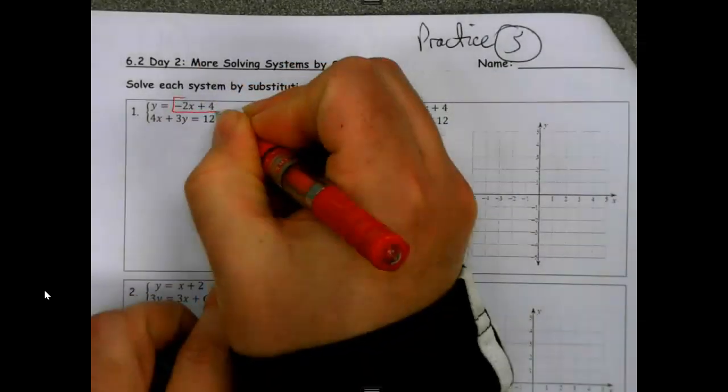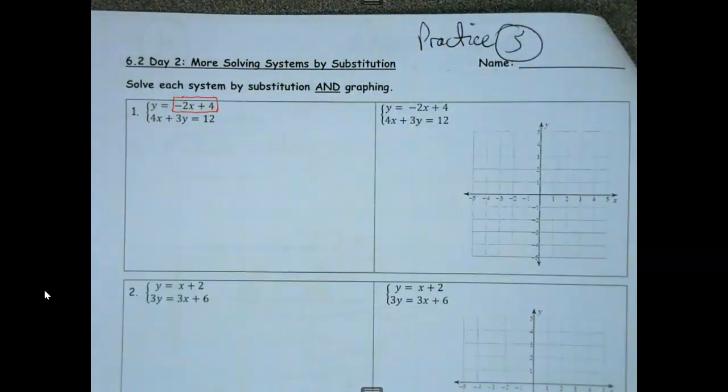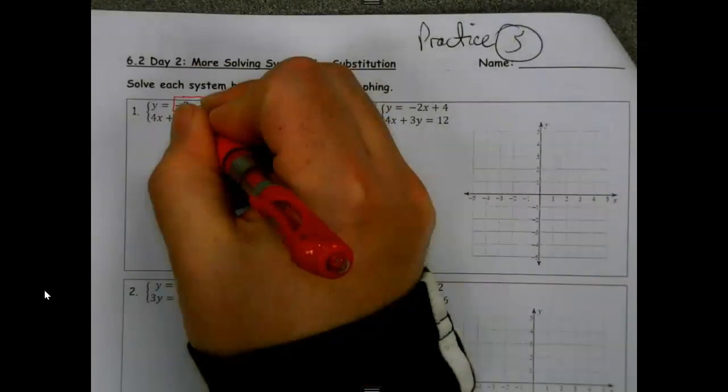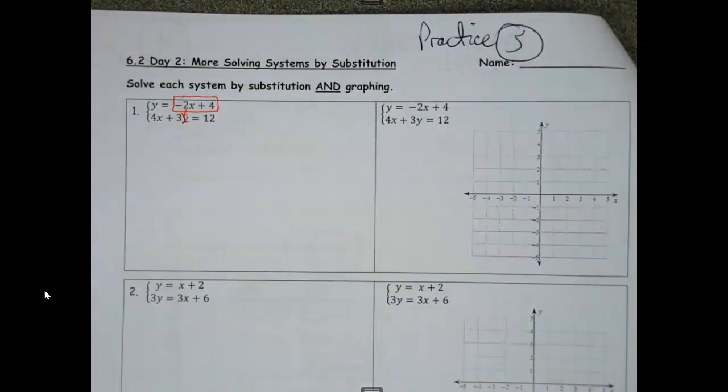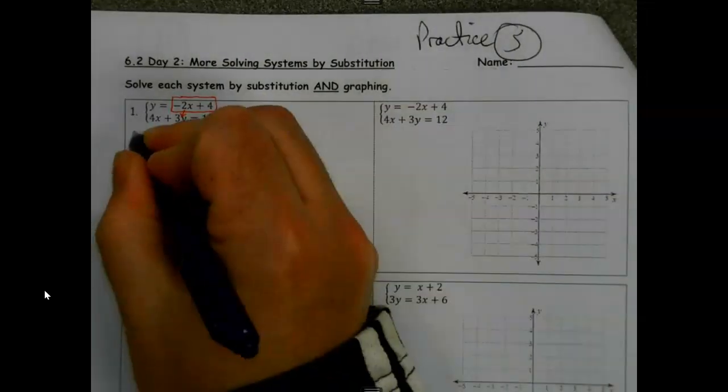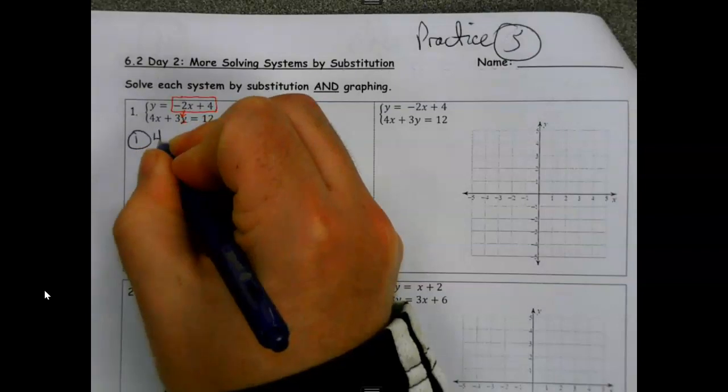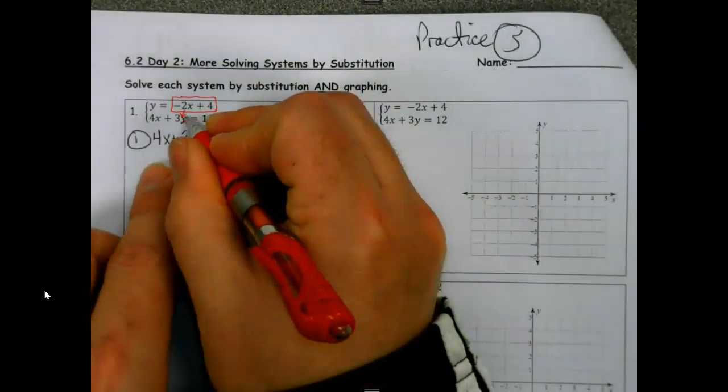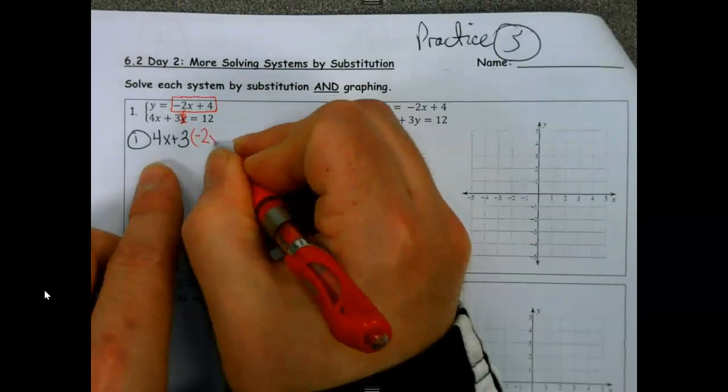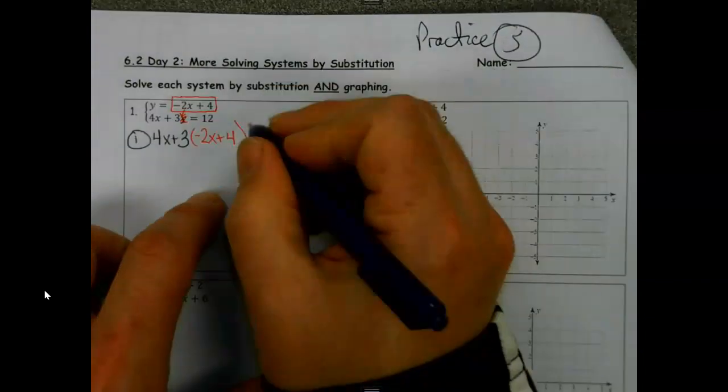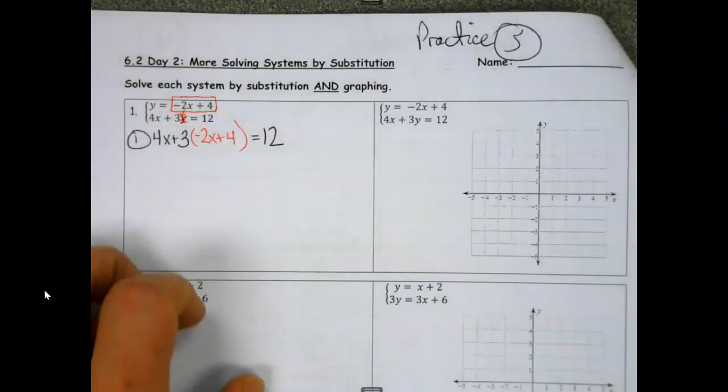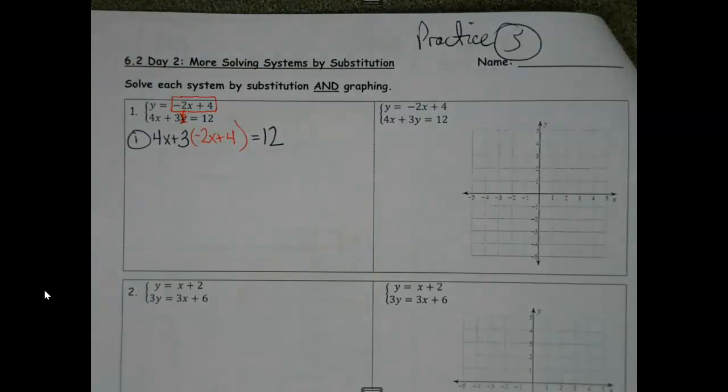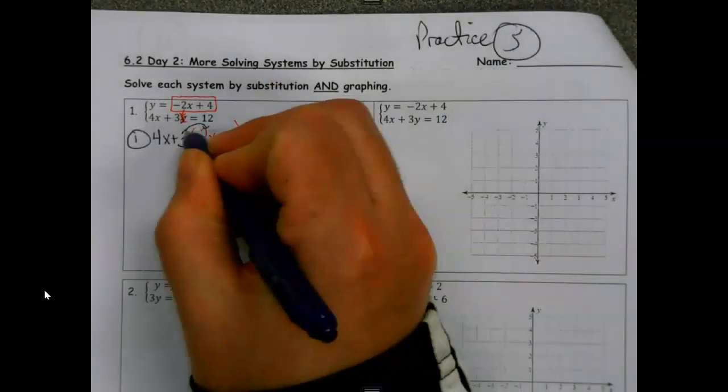Number one. We're going to take this, we're going to plug it in right there for y, just like we've been doing. Nothing different. So step one, I'm going to start copying that second equation until I get to the y. And when I get to the y, I'm basically going to replace it with what I have in the box. And as I have said many a time, if you would like colors so you can see the differences and things easier, got plenty of them in the back.